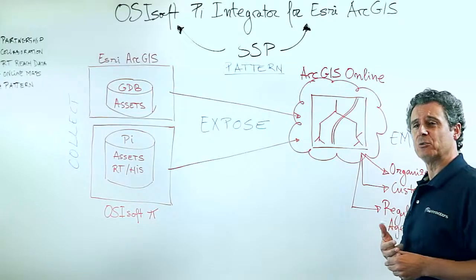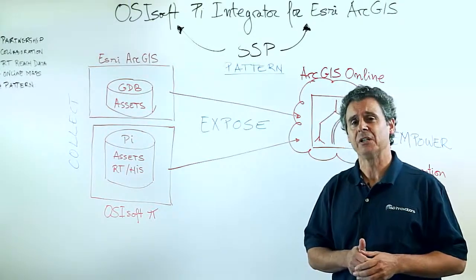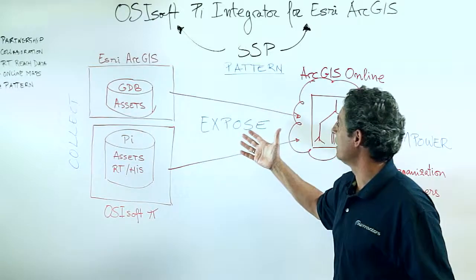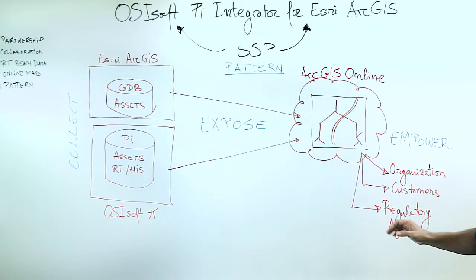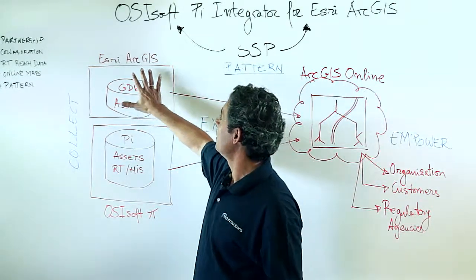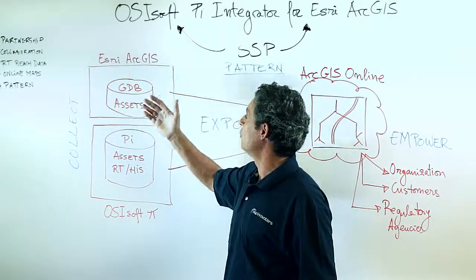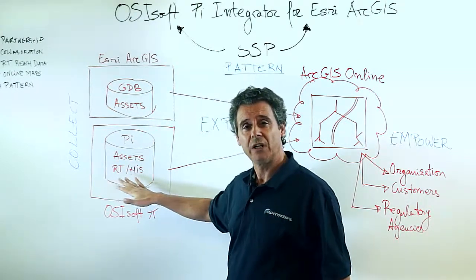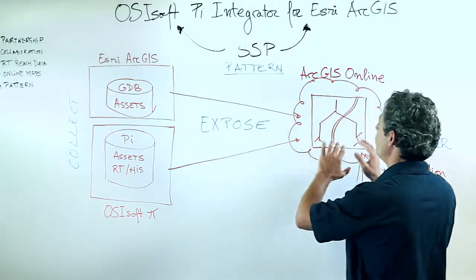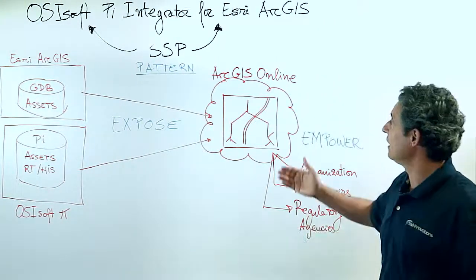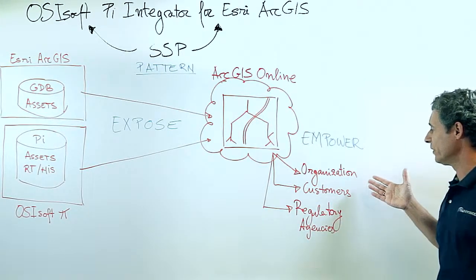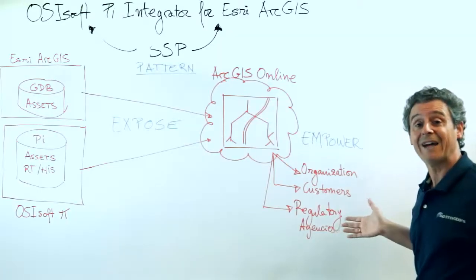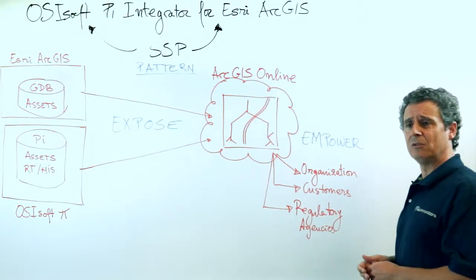SSP is very excited to collaborate in this partnership because it follows the pattern of the company — the simple pattern of collect your data, expose it, and empower your users. In GIS we collect data to create our assets, and in PI we can also collect not only assets but also real-time and historical information. Once collected and exposed to an online service like GIS Online, users — whether the whole organization, different departments, customers, or even regulatory agencies — will have access to it, and your data will be available for a wider public.